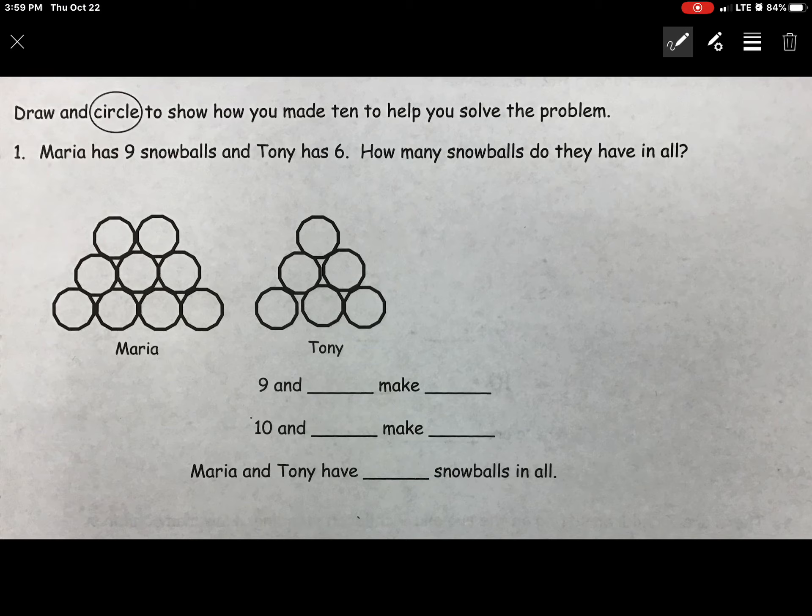The first thing that we do is we find our math facts. Maria has nine snowballs. Our math fact there is nine. So we want to circle the nine. And Tony has six. So our second math fact is six. We want to circle our six. Normally we would draw what we read but since the drawing has already been done for us we're going to look at our two groups and we're going to figure out which number is closest to 10.